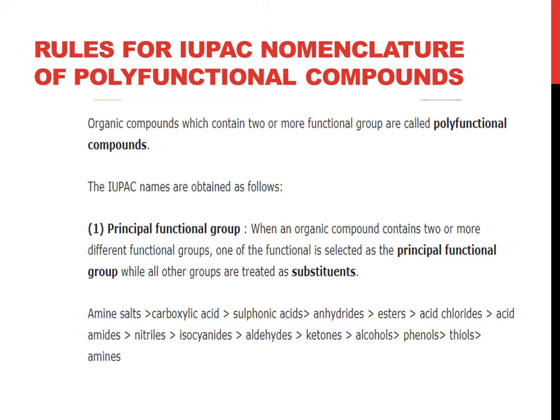Organic compounds which contain two or more functional groups are called polyfunctional compounds. The IUPAC names are obtained as follows. First, principal functional group: when an organic compound contains two or more different functional groups, one of the functional groups is selected as principal and the other as substituent.